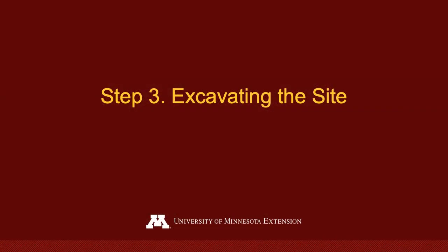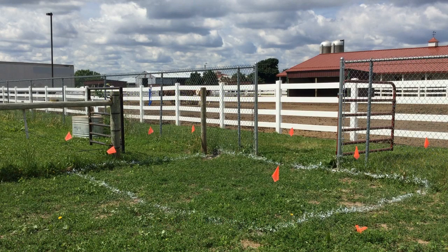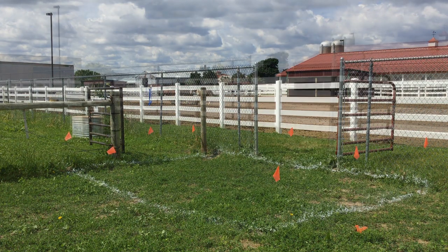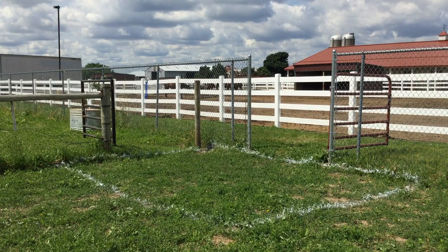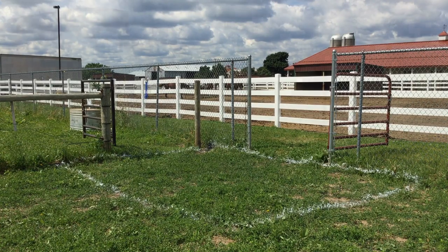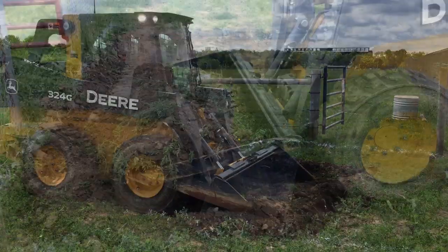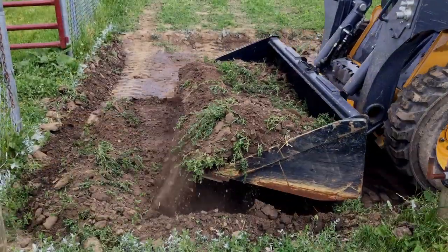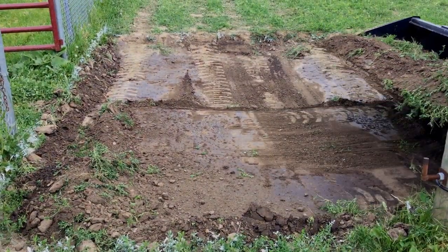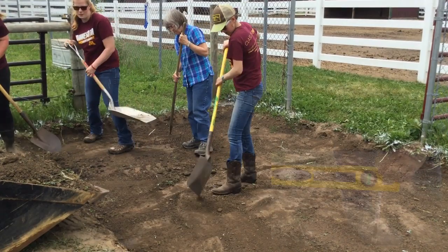Now that all of your materials are ordered and assembled, you are ready to excavate. Start by marking out the total area of your high traffic pad by measuring and marking with paint and flags. Make sure to remove the flags before excavation. Excavate topsoil down eight inches across the entire area of the high traffic pad, and ensure that the base of the pad is level.